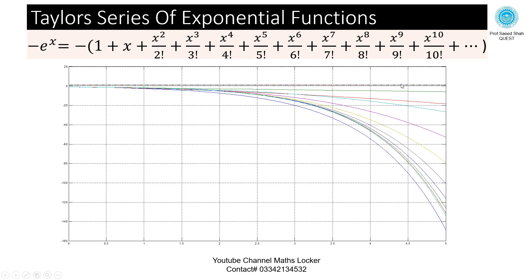When taking the single term, minus 1, here is the graph — this is called the zero order. When taking two terms, minus 1 plus x, then the graph is here — this is called the first order. When taking three terms, minus 1 plus x plus x squared over 2 factorial, the graph of three terms is here — this is called the second order.